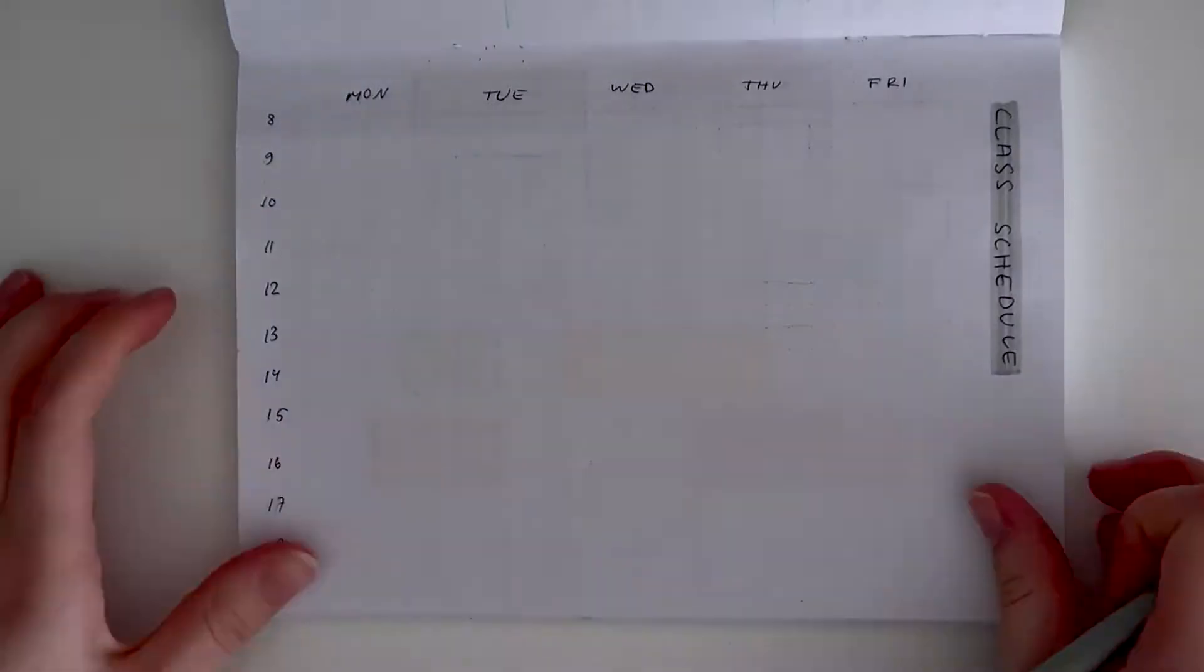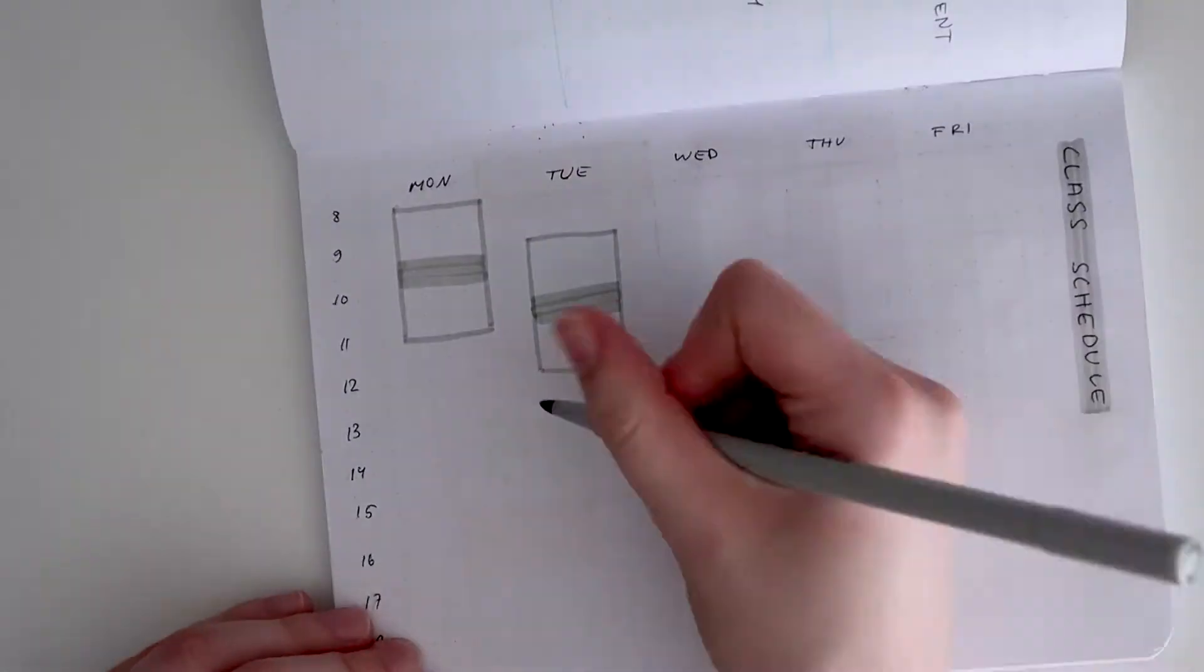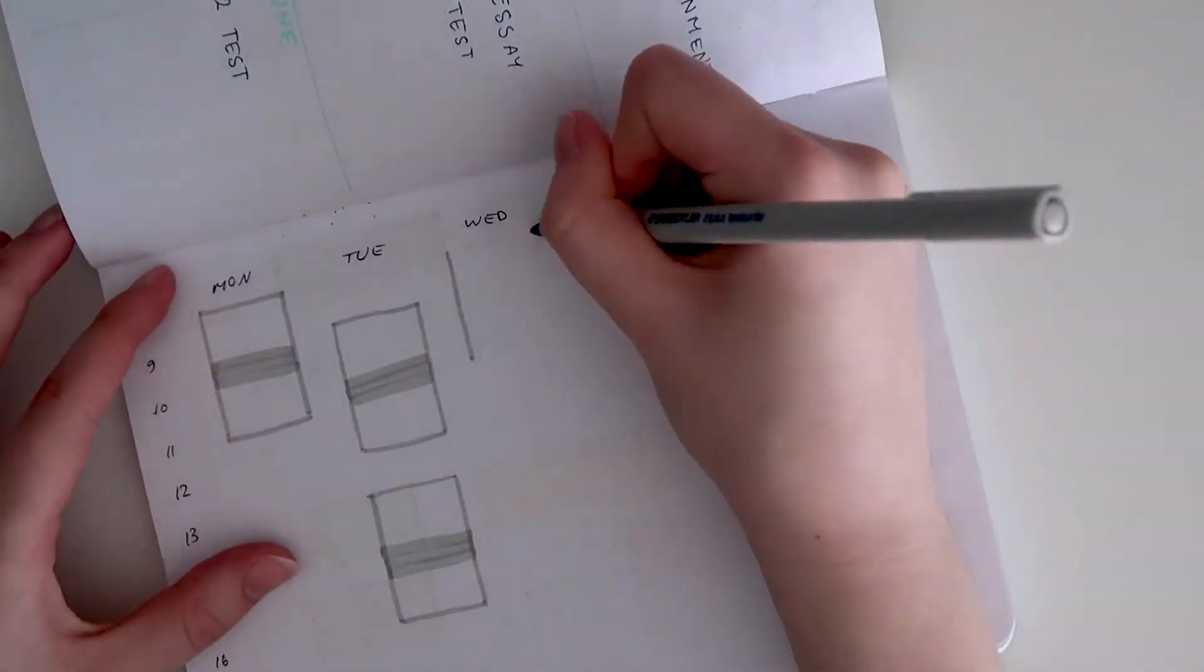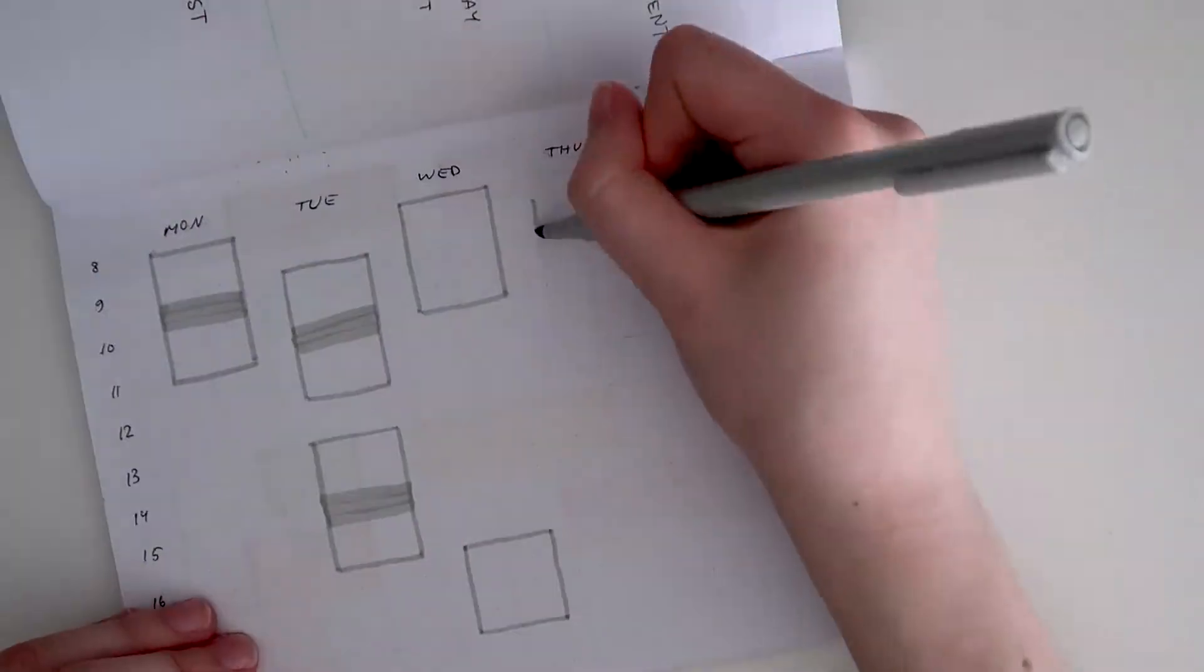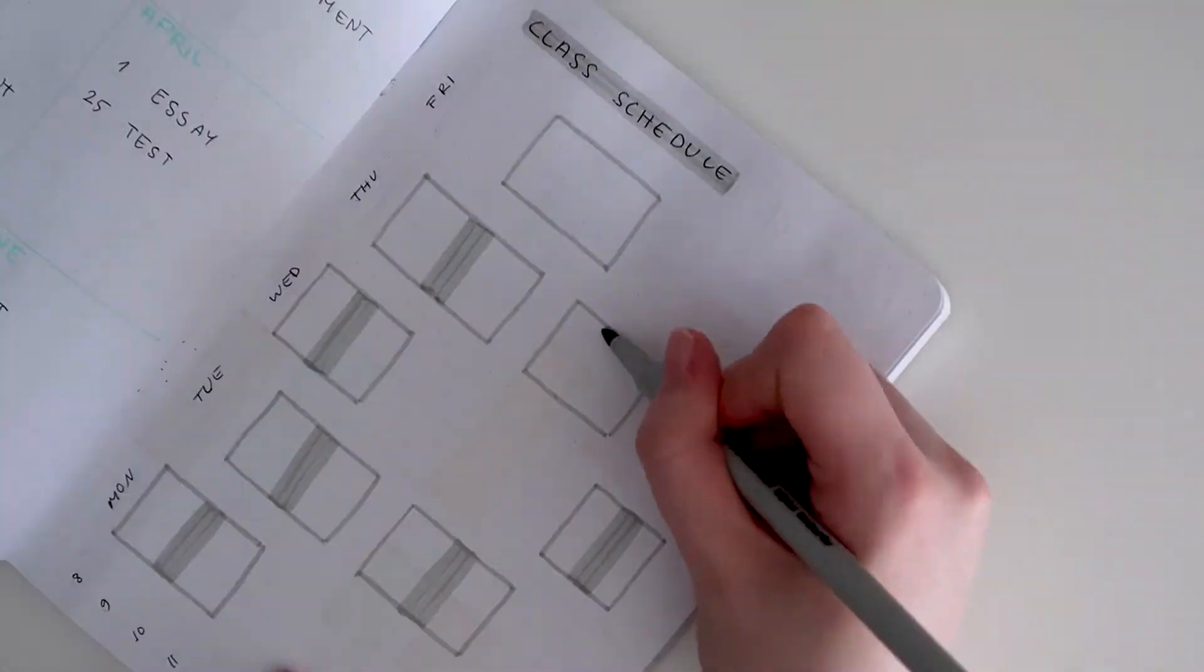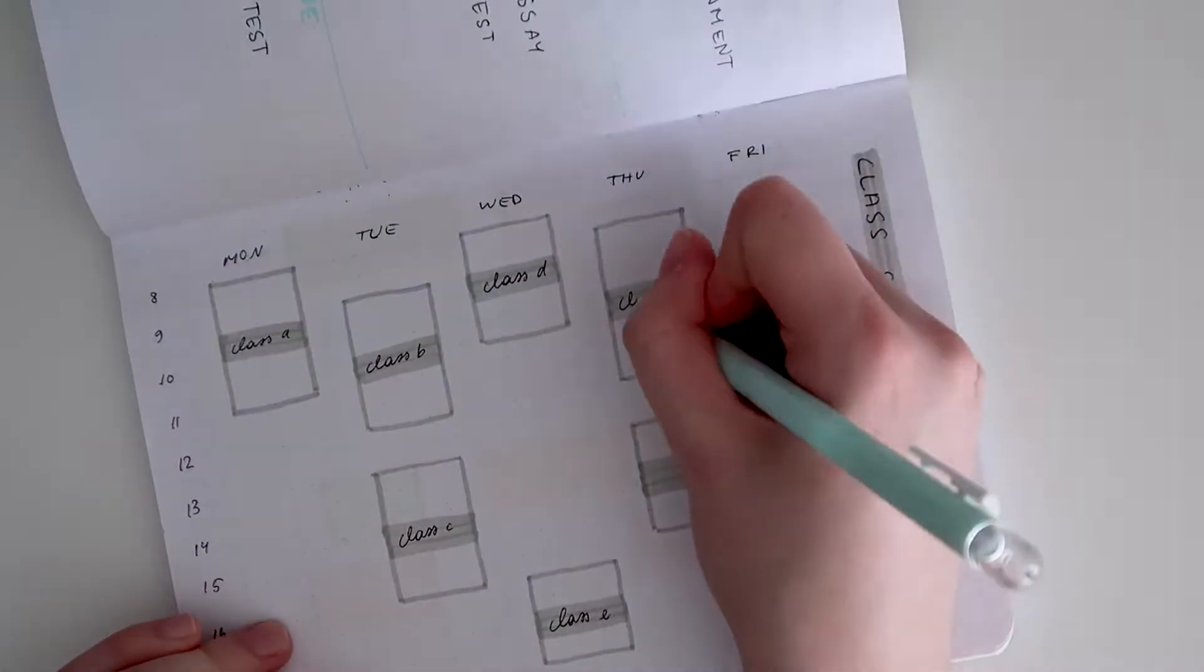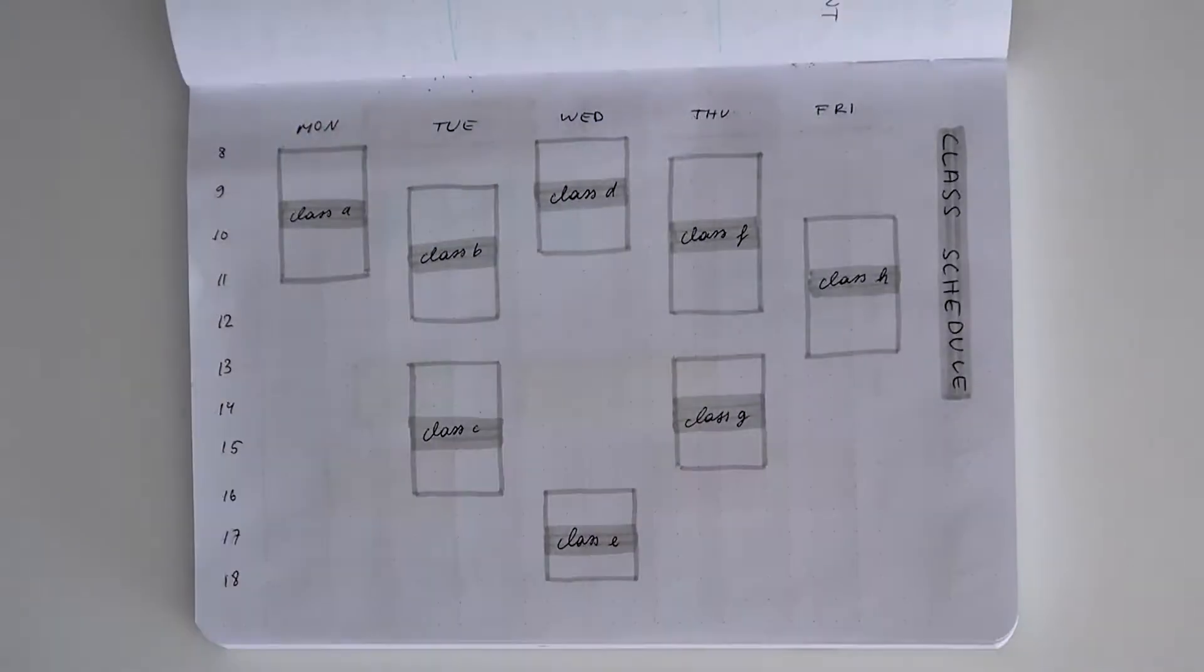This is a class schedule. I just wrote in the times, wrote in the days, and then I filled in the boxes. This is just so I have an overview of the day, what it looks like, when I have time to do other things, and when I need to make sure I eat lunch at the proper times.